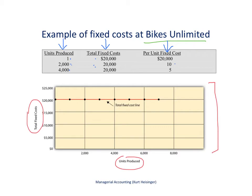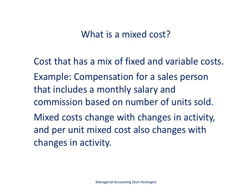Remember, the term 'fixed' applies to what happens to total costs with changes in activity — they stay the same. A mixed cost has a combination of both fixed and variable cost components. For example, if salespeople are paid a monthly salary regardless of how many units they sell — that's the fixed component — plus a commission based on units sold — that's the variable component — then total and per unit costs both change with activity.